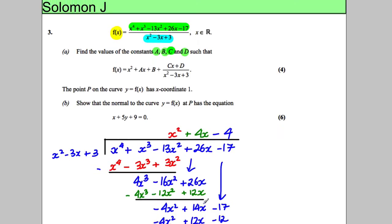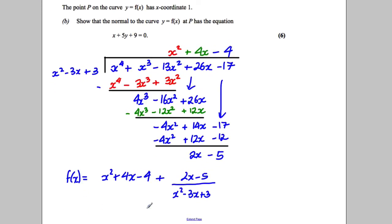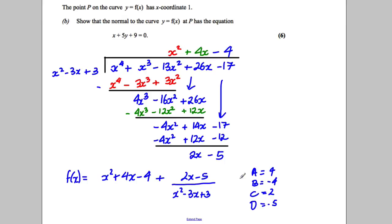Going back to our question — find the values of a, b, c and d — we state them: a is clearly 4, b is clearly −4, c is clearly 2, and d is clearly −5. So that's the way you do it by long division.